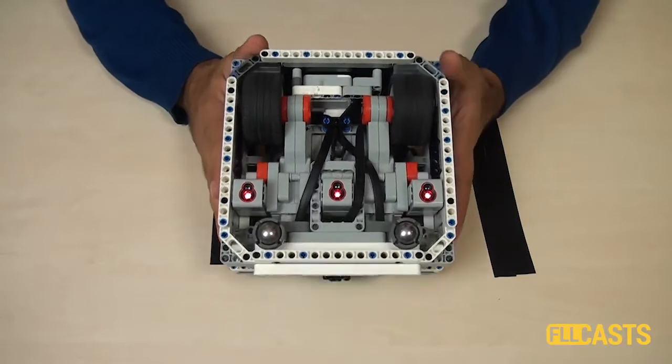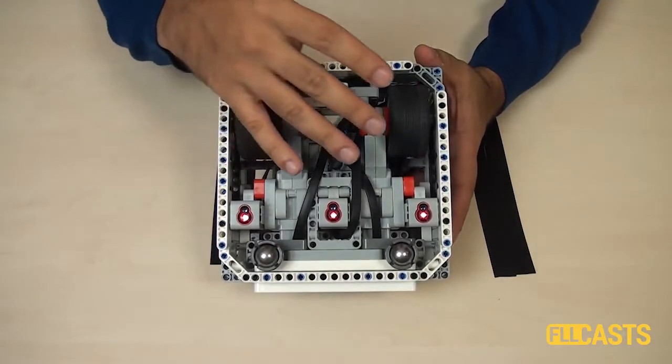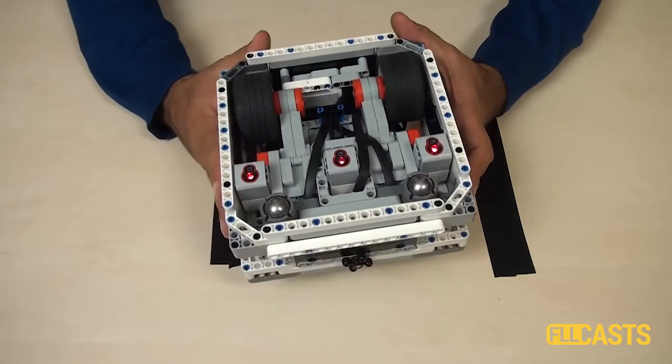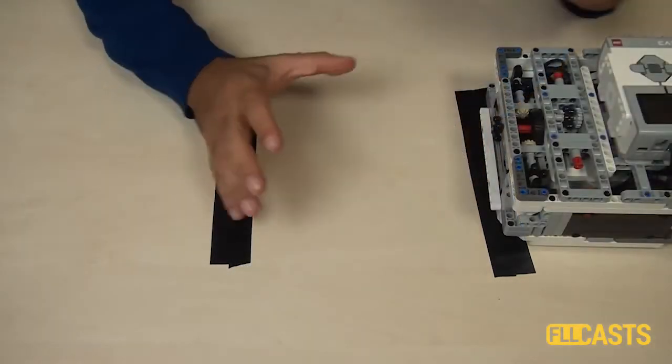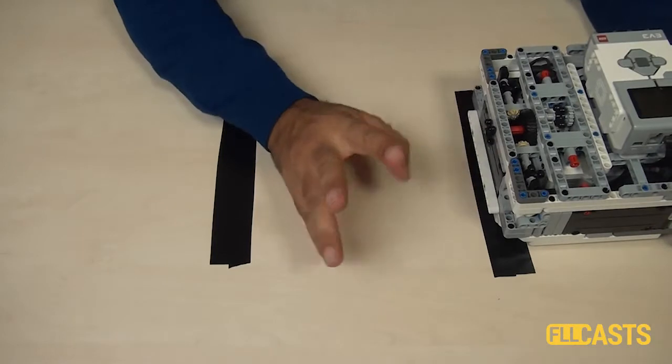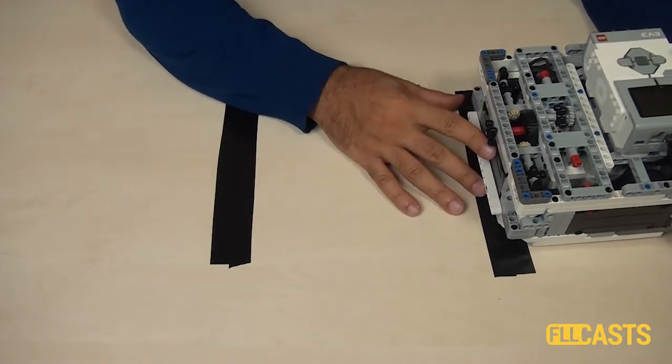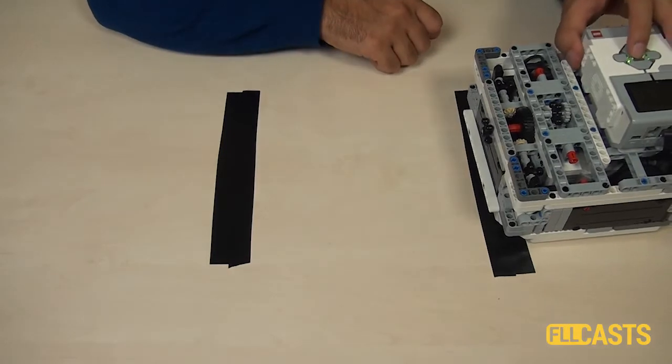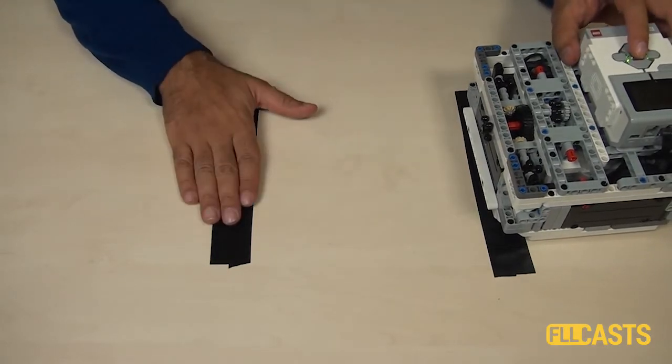So in this series of tutorials, we'll implement the calibration ourselves discussing the principles of color sensor calibration. At the end, we'll have three blocks that we can import in the EV3G software and we'll have a program for calibrating and stopping on a black line.